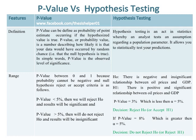The null hypothesis H0 is: there is a negative and insignificant relationship between oil prices and GDP. Whereas the alternative hypothesis H1 is: there is a positive and significant relationship between oil prices and GDP.